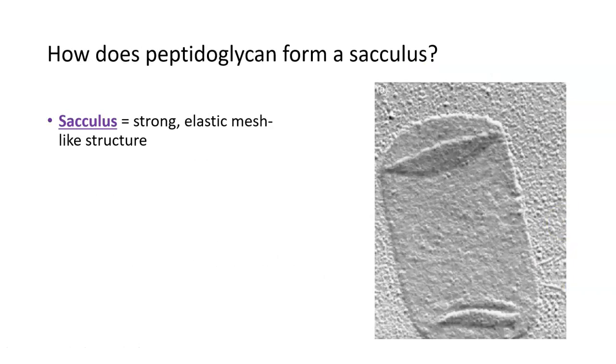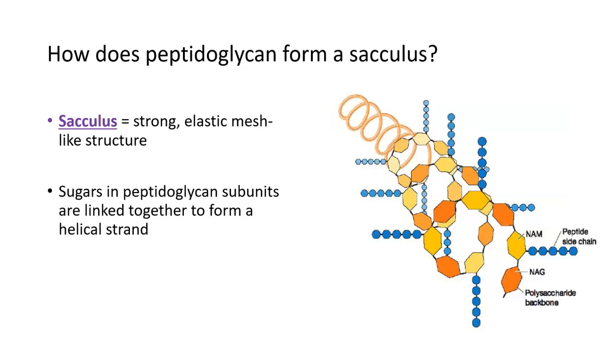And peptidoglycan, if we were to kind of zoom out and look at the big picture, creates this strong mesh structure, which you can see here in the image, called a sacculus. And the way that these subunits of peptidoglycan are strung together to make this sacculus is something that looks like this. Here's one peptidoglycan subunit right here in the front. It's got two sugars and the small peptide chain. And that is linked to another peptidoglycan subunit.